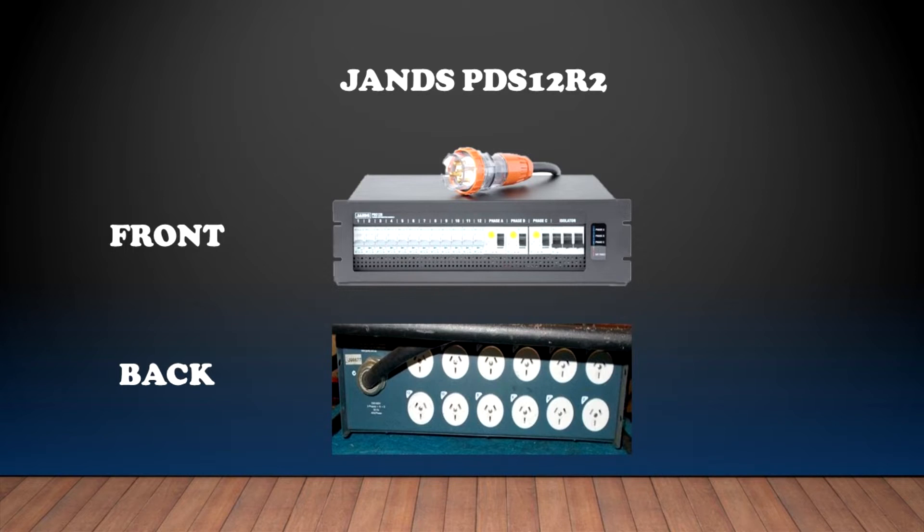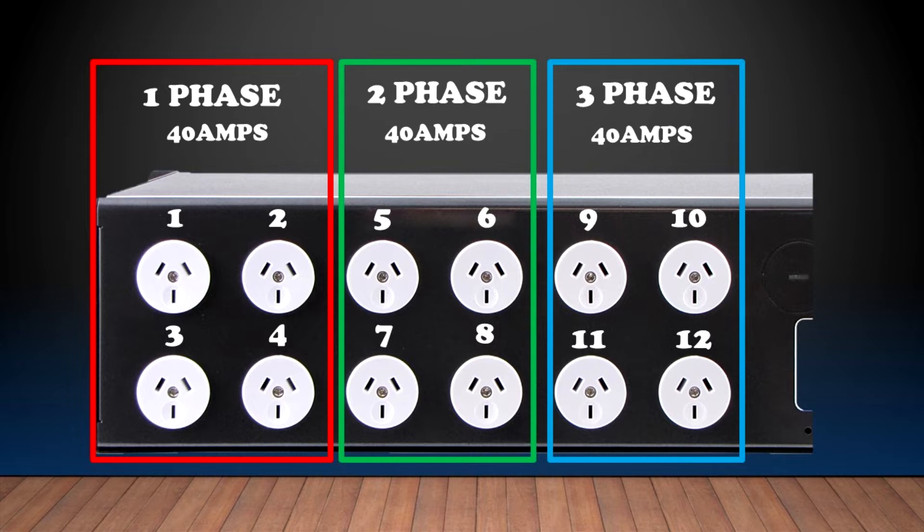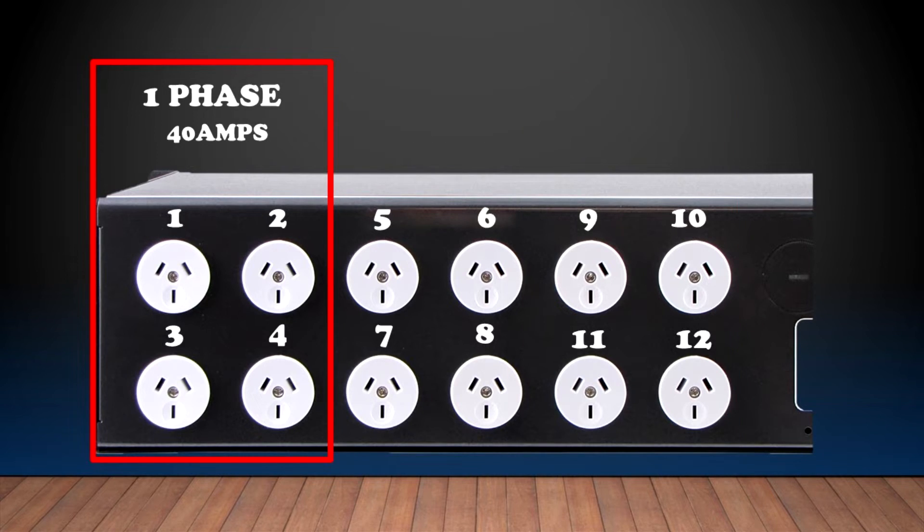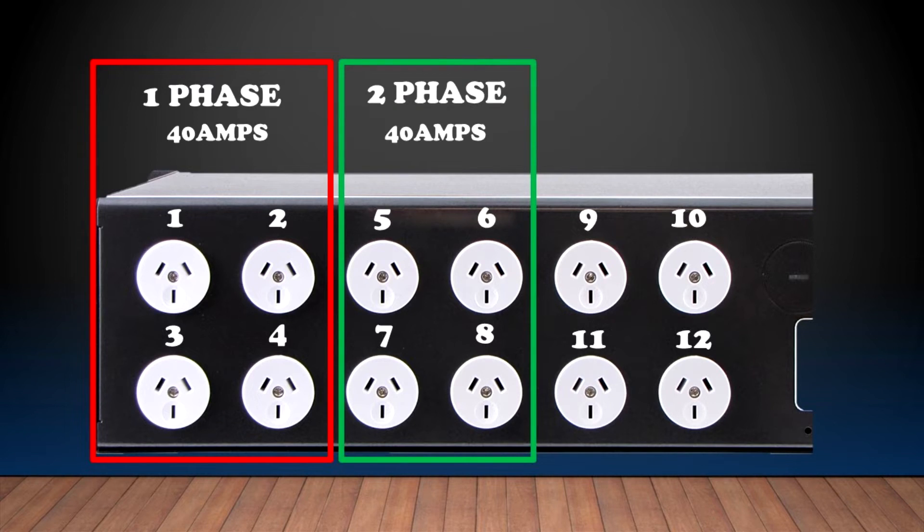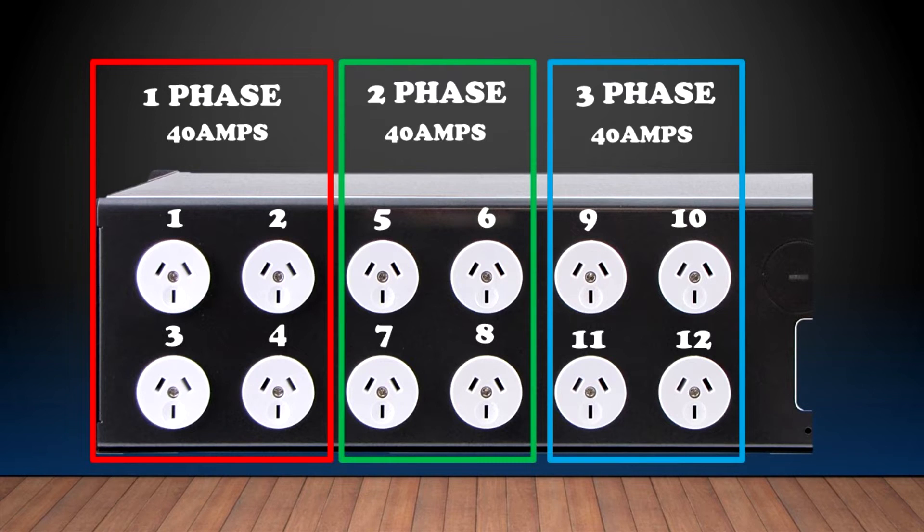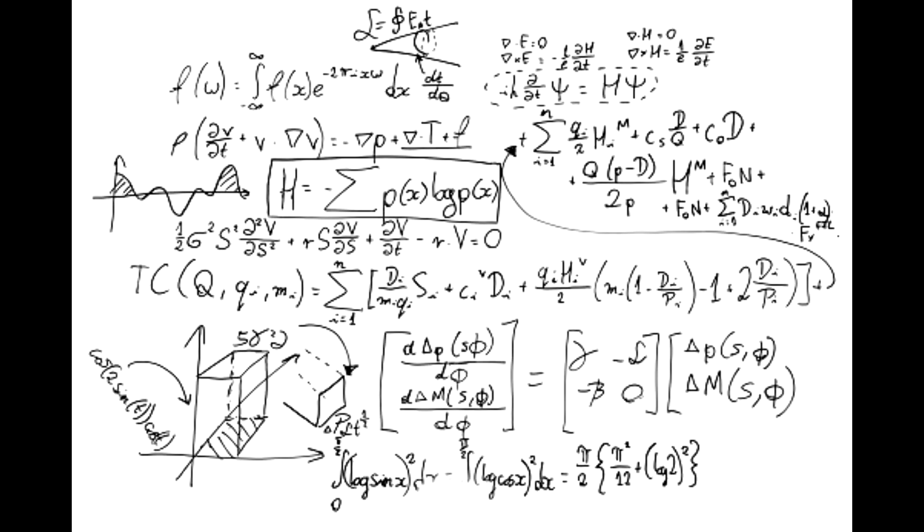And that will give us 40 amps per phase. So the four sockets at the back of the distro will be one phase. From one to four, the sockets from five to eight will be phase two, and the sockets from nine to twelve will be phase three. A bit more about it towards the end of the video. So we can start doing some calculation to ensure your gig will have enough power for you to run it safely.